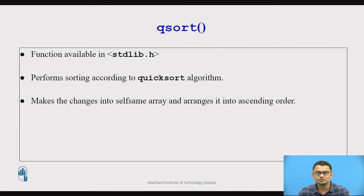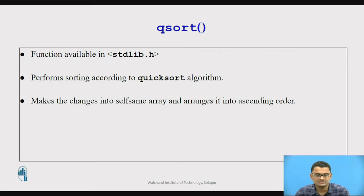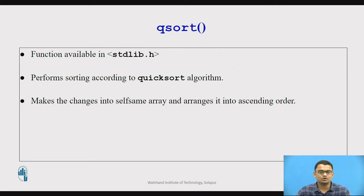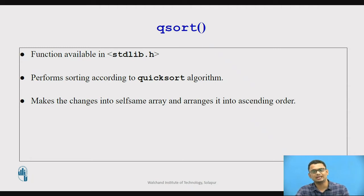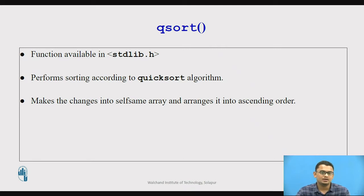The qsort function is defined and readily available in the header file stdlib.h. What this function does is perform sorting according to the qsort algorithm. As a prerequisite, I expect you to go through how qsort actually works. This function gives you the exact functionality of the qsort algorithm and is already defined and available in stdlib.h.